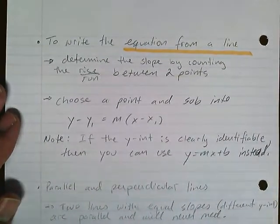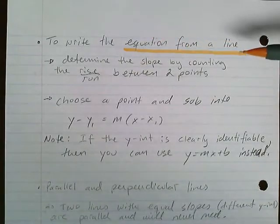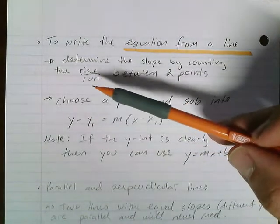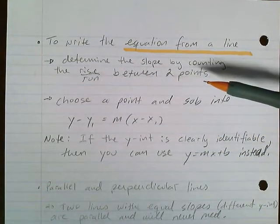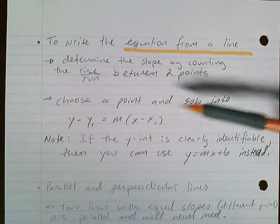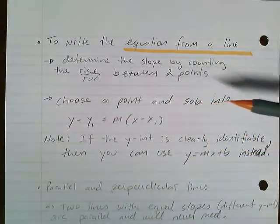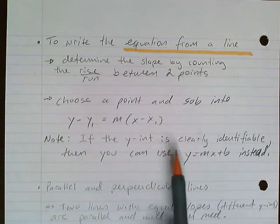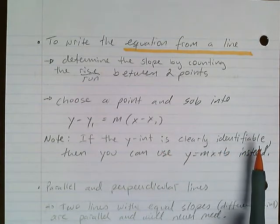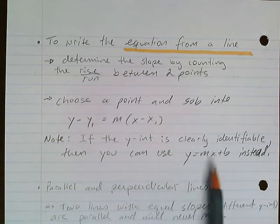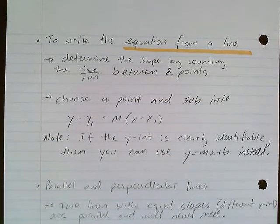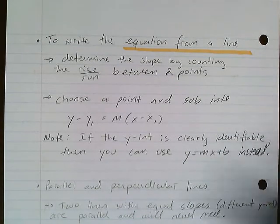To write the equation from a line, determine the slope by counting rise over run between two points, and they have to be exactly on an intersection. Then choose a point and substitute into this equation. I know that if the y-intercept is clearly identifiable, then you can use this - you know your slope, you know your y-intercept, and then you're done. If they were to ask for this form anyway, then you're there.